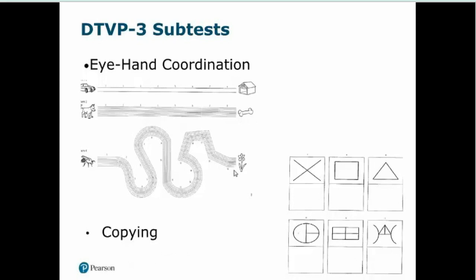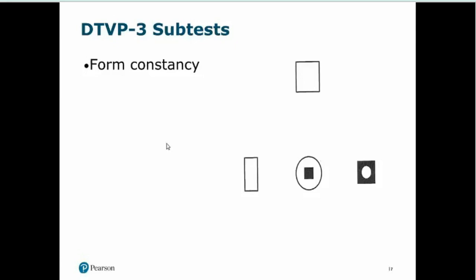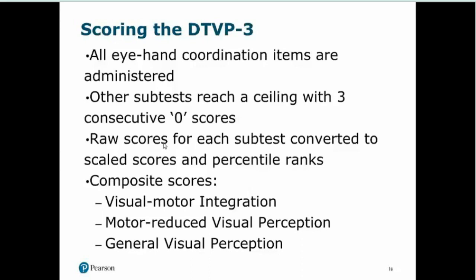The DTVP3 progresses more rapidly through developmental stages than the VMI, so bear that in mind particularly when assessing a younger child who may reach a ceiling quickly. Then we have the visual perception subtests: figure ground — finding a shape within an array of competing shapes; visual closure — finding one that would look the same if complete; and form constancy — finding the shape even though it's been altered in some way.